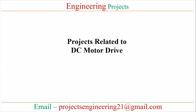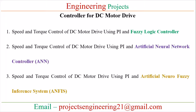Let's start with what kind of projects you can adopt for DC motor drive. These three topics are related to the controller — different controllers you can use for DC motor drive. First is speed and torque control of DC motor using PI and Fuzzy Logic controller. Second is speed and torque control of DC motor using PI and Artificial Neural Network controller. Third is speed and torque control of DC motor drive using PI and Artificial Neuro-Fuzzy Inference System. If you are interested in working in the control system area including the electrical machines area, you can adopt these three topics.